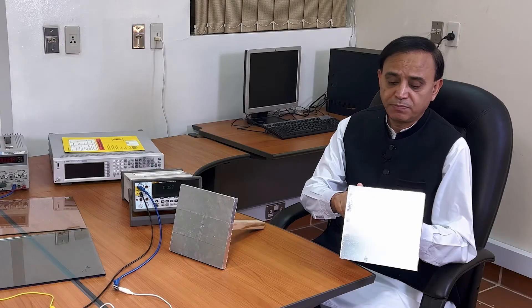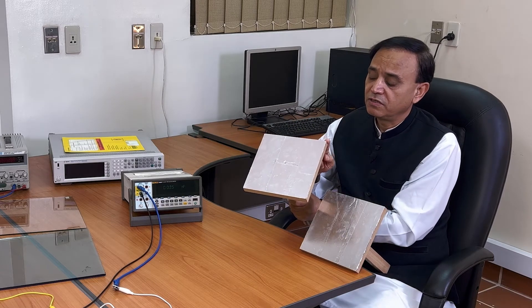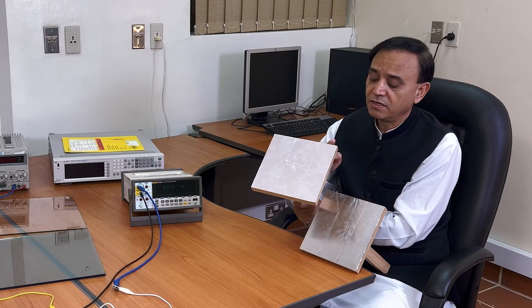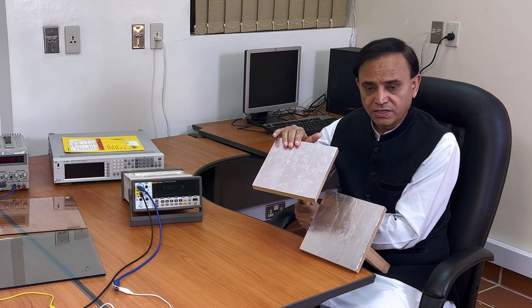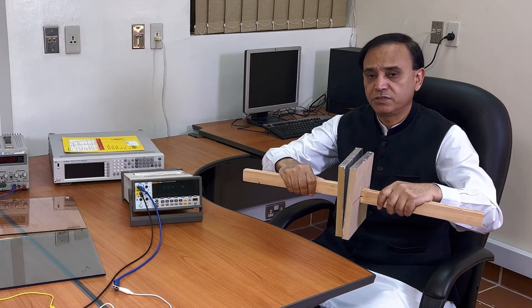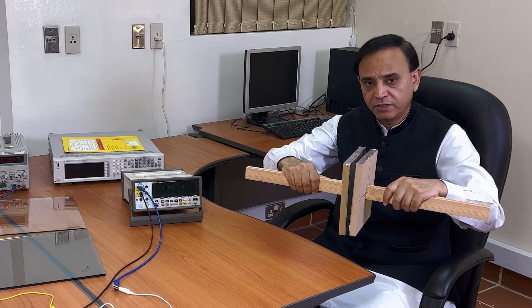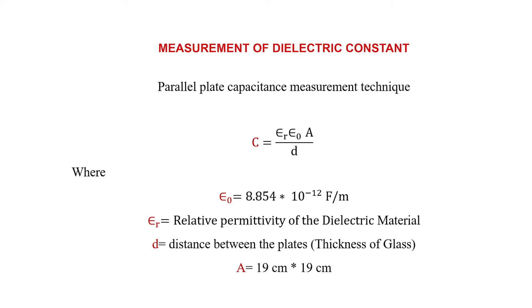These are basically two parallel plates which we will be using. They have been created using wooden blocks. The size is 19 centimeter by 19 centimeter and we have pasted aluminum on one side — both plates have the same size. By putting them parallel to each other and inserting our material within, we can calculate the capacitance, and from that capacitance we can use the formula shown on screen, where A is the area of the plates and D is the distance.